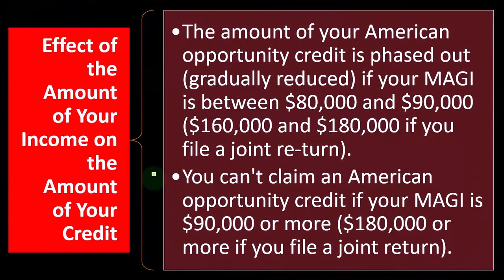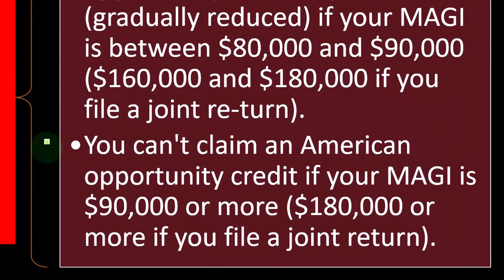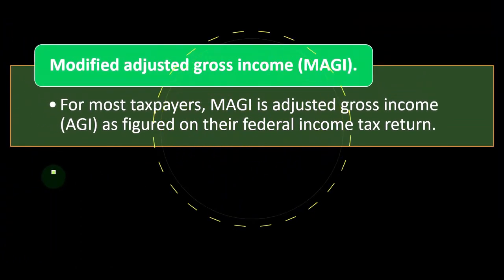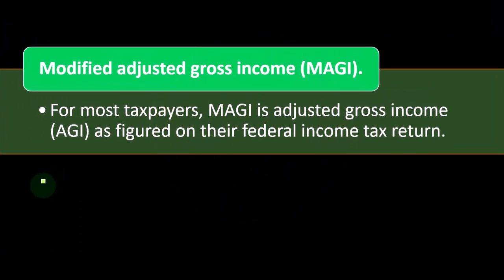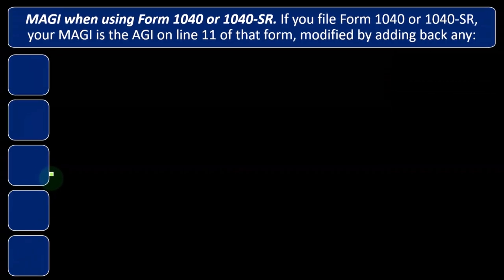You can't claim an American Opportunity Credit if your MAGI — modified adjusted gross income — is $90,000 or more, or $180,000 or more if you file a joint return. For most taxpayers, the MAGI is simply the adjusted gross income, the AGI, as figured on your federal income tax return.